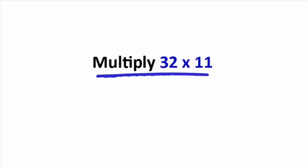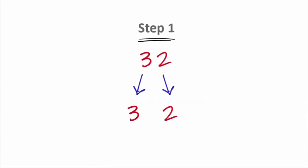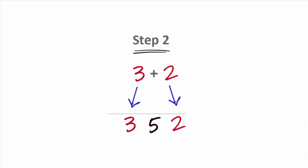32 times 11. How do we do this? Through Vedic maths. What we do is step one: we separate 3 and 2. That gives us something like this and we simply add 3 and 2. So the answer becomes 352. It's as simple as that. Why don't you try?